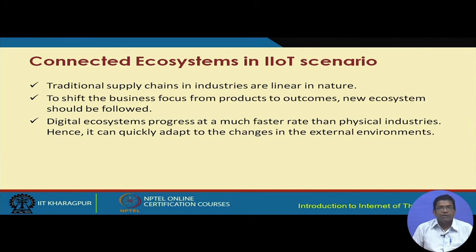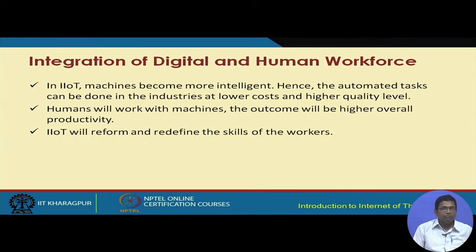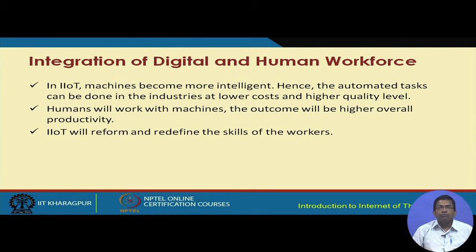In the IIoT domain we have connected ecosystems. Traditional supply chains in these industries are typically linear in nature. It is required to shift the business focus from products to outcomes, and IIoT-based digital ecosystems can come to the rescue. Digital ecosystems progress at a much faster rate than physical industries and can quickly adapt to changes in external environments. It is required to integrate digital technologies with the human workforce — IIoT cannot be exclusively M2M; humans must be in the loop.